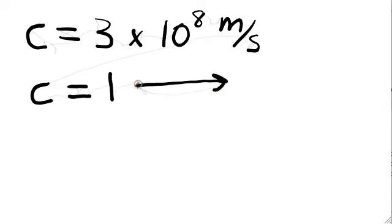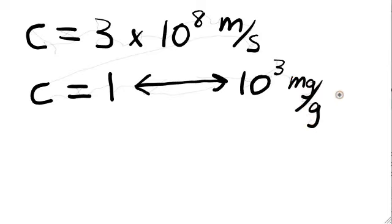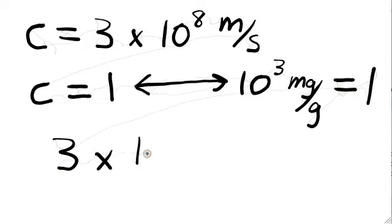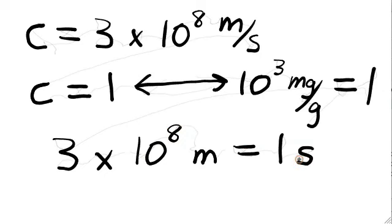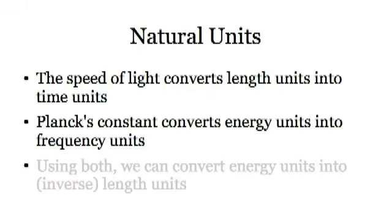Now we're ready to take a big conceptual leap and set the speed of light equal to 1. This should be thought of as the same as setting 1000 milligrams per gram equal to 1. In other words, it's just a unit conversion factor. But this time, it's a conversion between units of distance and units of time. The lesson we learned from special relativity is that measuring length and time in different units is just as unnatural as measuring some masses in milligrams and others in grams.